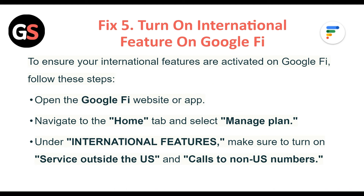Fix 5: Turn on the international feature on Google Fi. To ensure your international features are activated, open the Google Fi website or app, navigate to the Home tab and select Manage Plan. Under International Features, make sure to turn on service outside the US and calls to known US numbers.